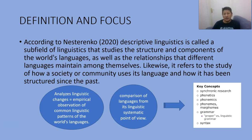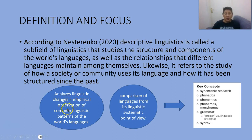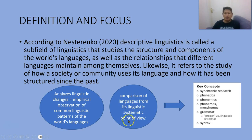That means our language — for example, where it's coming from, from which language it came from. It analyzes linguistic change through empirical observation of common linguistic patterns of the world's languages. We can see where it's coming from through comparisons of languages from a systematic linguistic point of view.